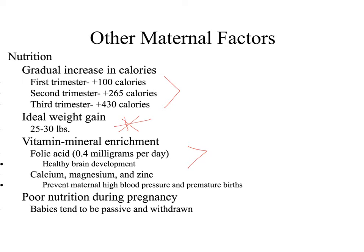Poor nutrition during pregnancy can lead to a series of characteristics in a child. If the mother is undernourished or eating inadequately during pregnancy, the baby is likely to be passive and withdrawn, which may result in poor eating habits and poor sleep, making them more susceptible to illness.